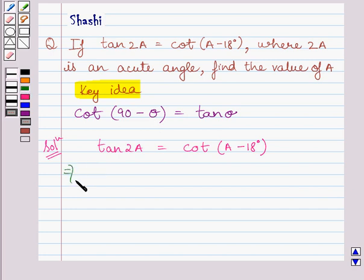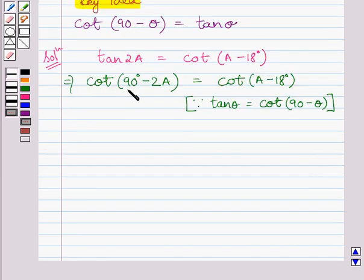This implies cot(90° - 2A) is equal to cot(A - 18°). These are equal only when the values of these two angles are equal. So this implies 90° - 2A is equal to A - 18°.